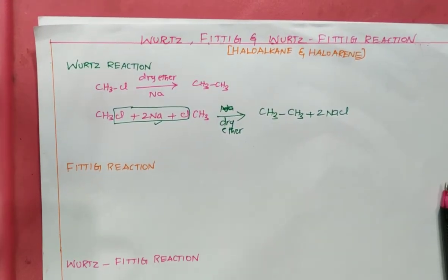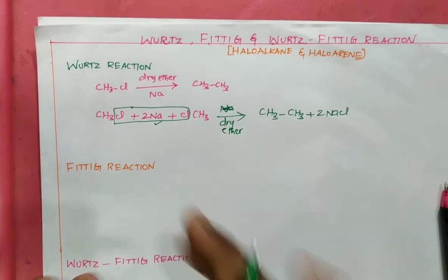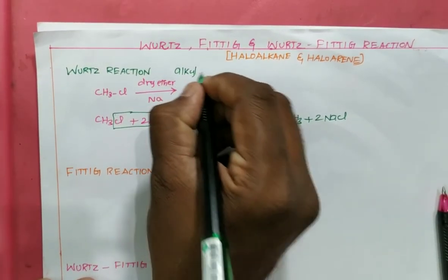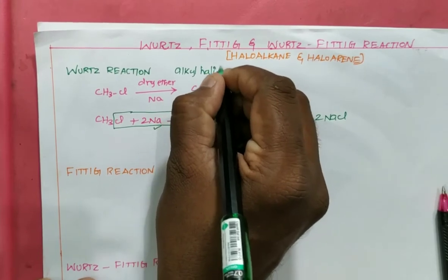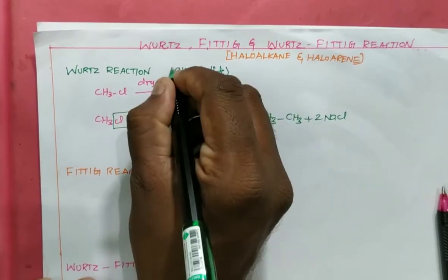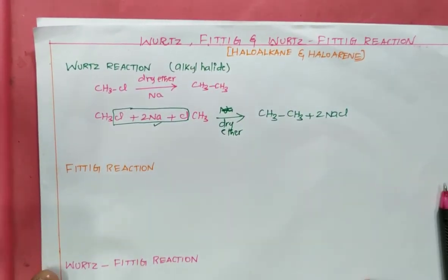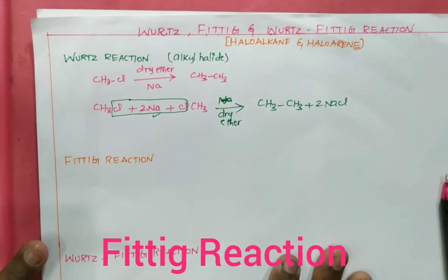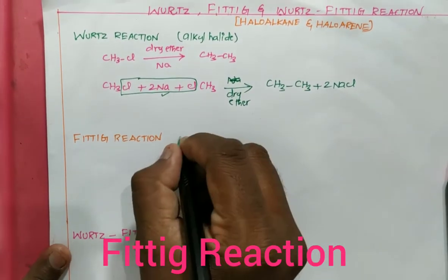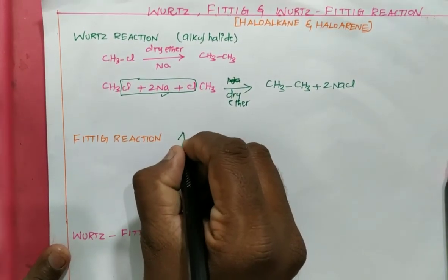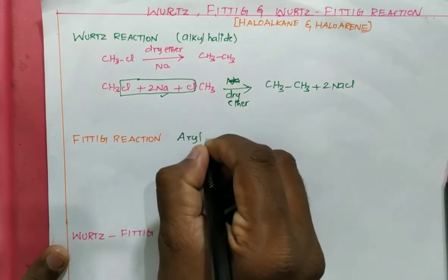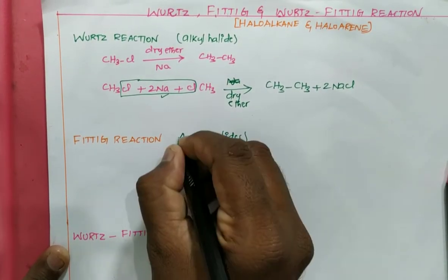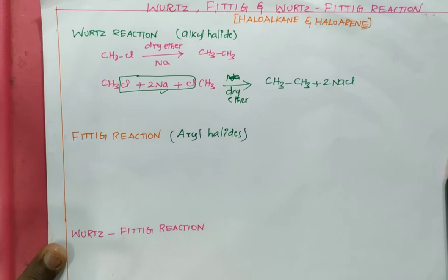This is the Wurtz reaction. It is entirely for alkyl halides — the reactants are alkyl halides, which are converted into higher alkanes. And the Fittig reaction? This reaction is entirely for aryl halides; the reactants are aryl halides.